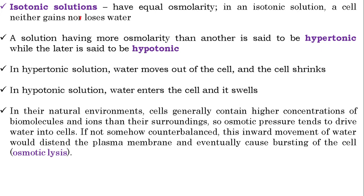A solution having more osmolarity than another is said to be hypertonic. A solution is hypertonic when it has more osmolarity compared with the surrounding solution — for example, when the cytoplasm has more solute concentration. On the other hand, a solution is hypotonic when its osmotic concentration is lower compared to the surrounding solution. So remember: a hypertonic solution has more solute concentration, while a hypotonic solution has lower solute concentration.